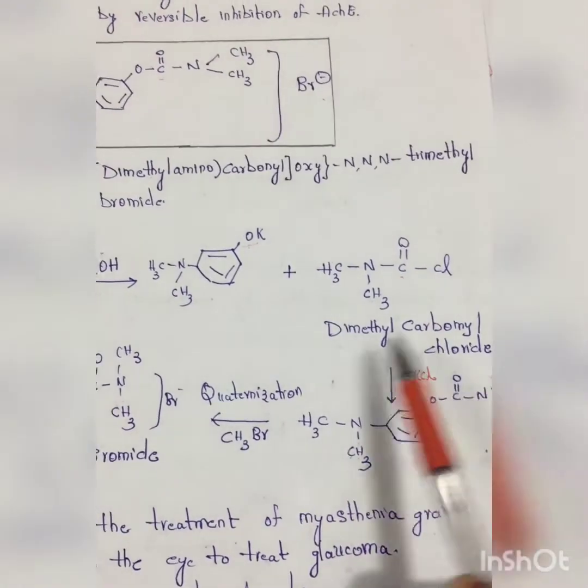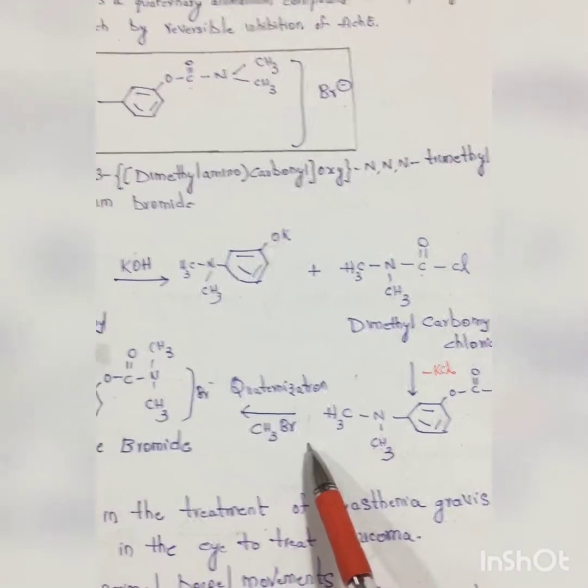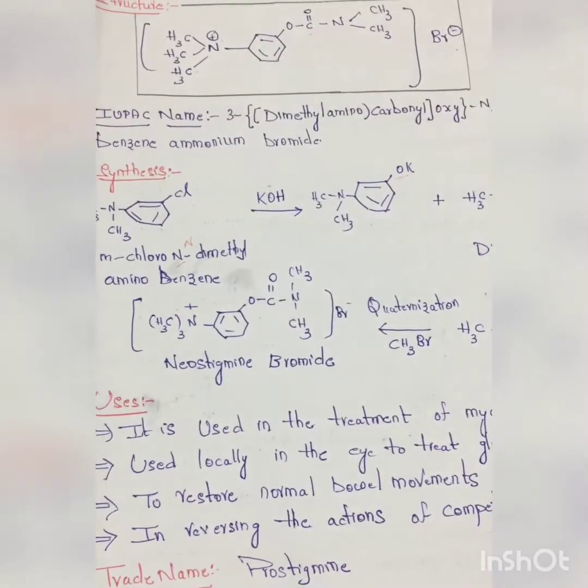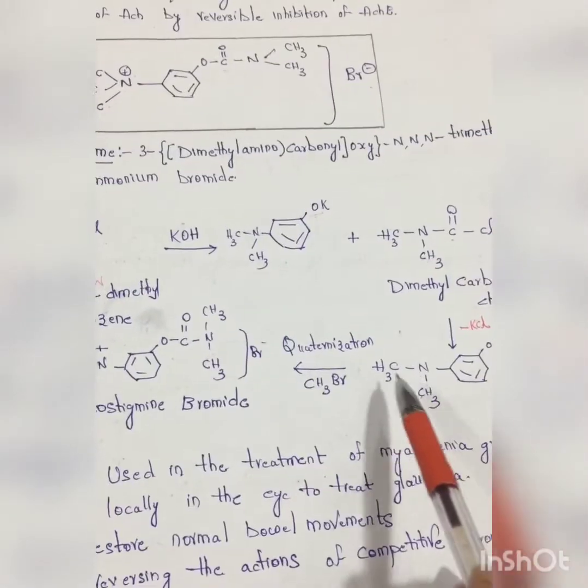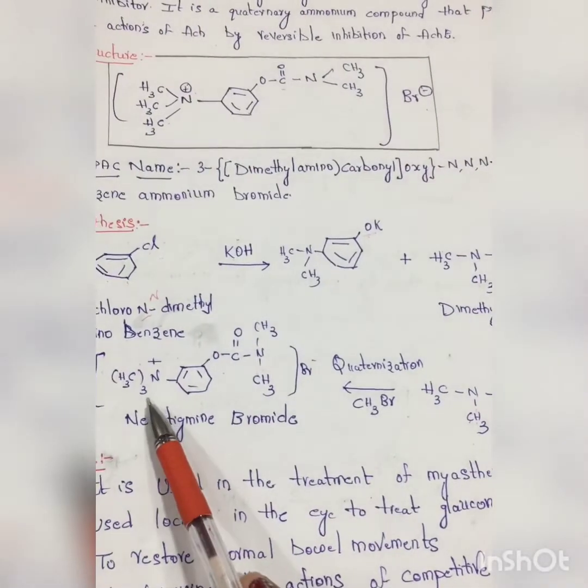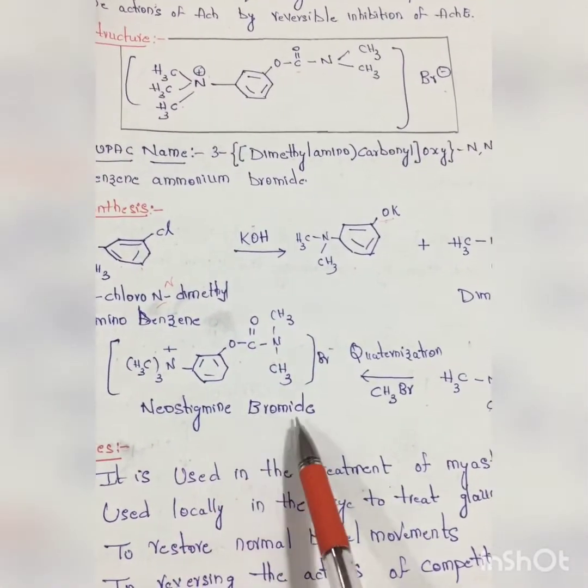Now this intermediate goes for quaternization, that is reaction with methyl bromide, to get Neostigmine as the bromide salt. So methyl bromide is the reactant. Actually there are already two methyl groups, but it is a quaternary amine group, so one more methyl group is added and bromide salt is obtained, thereby we will get Neostigmine Bromide.